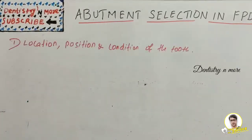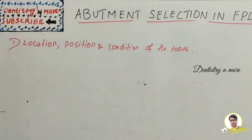We have five to six major factors or criteria to select an abutment. The first one is the location, position, and condition of the tooth. Characteristics of the preferred abutment are teeth adjacent to edentulous spaces and teeth with grossly decayed crowns that can be restored with a full veneer crown.